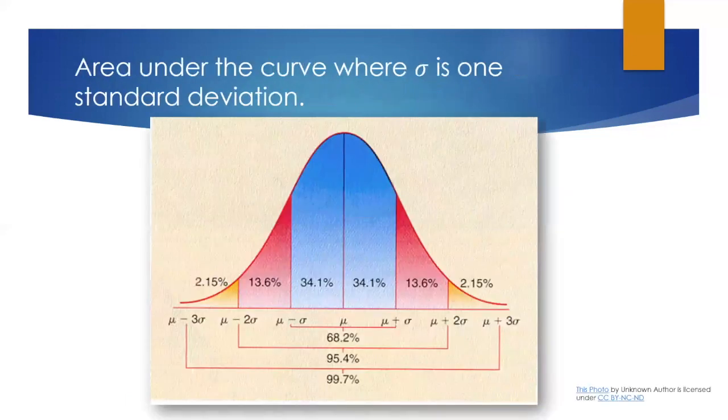Here's a picture that represents that. You can see that 13.6% is again the area between one and two standard deviations. Here, sigma represents one standard deviation and two sigma is two standard deviations. So what we have here is mu for the mean, mu plus sigma is the mean plus one standard deviation, mu plus two sigma is the mean plus two standard deviations.